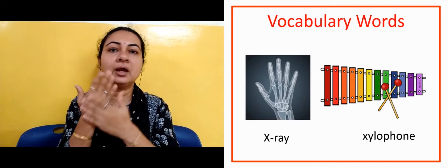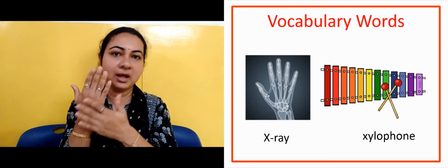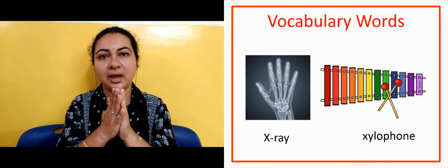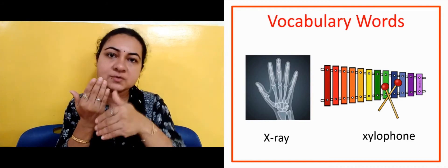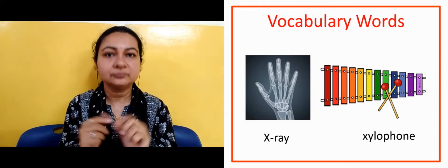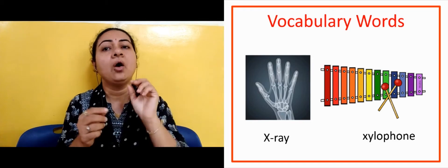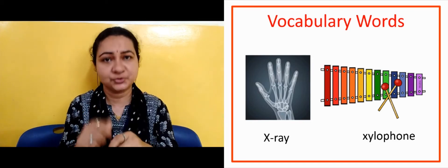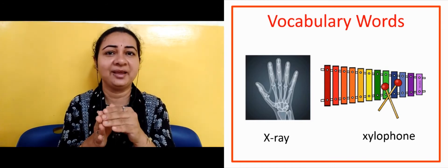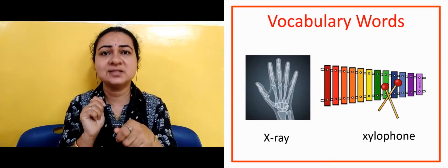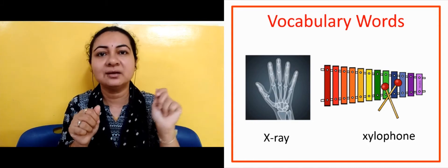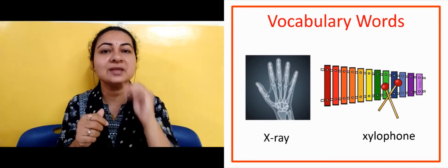This is the hand that is shown in the X-ray. This is an X-ray — it is like a photograph, but we can see the bones inside. Another word is xylophone — it is a musical instrument.